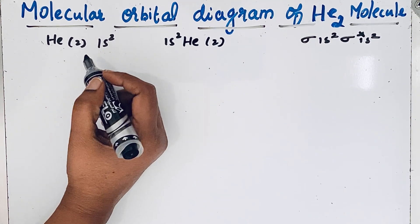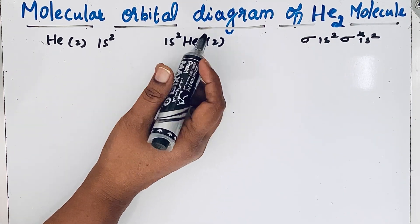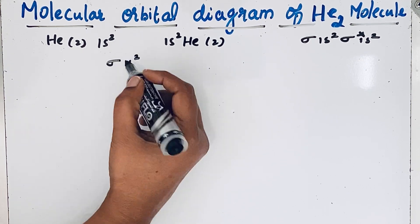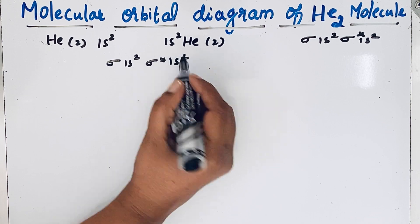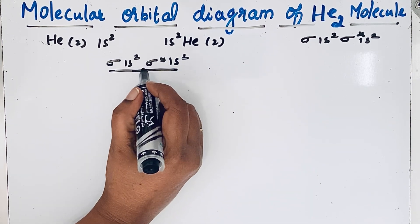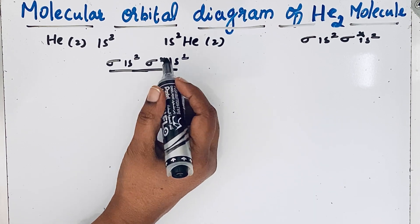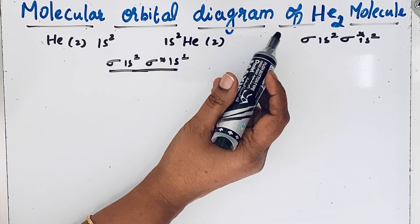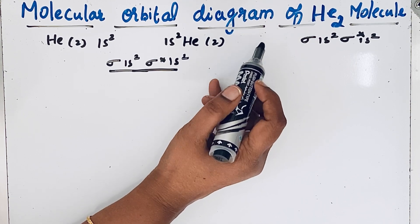So we can write the molecular electronic configuration for the helium molecule as sigma 1s² sigma star 1s². Using this molecular orbital configuration, we will now draw the molecular orbital diagram for the helium molecule and find out whether this helium molecule exists or not.